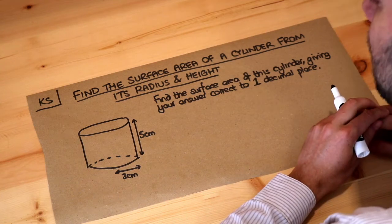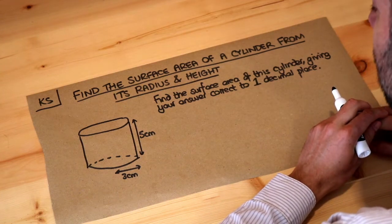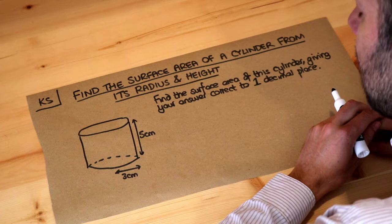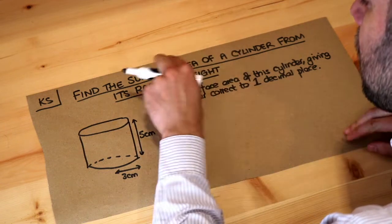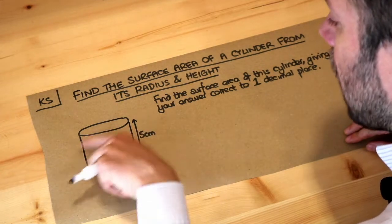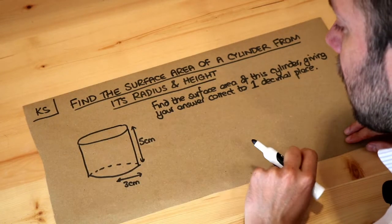Hello and welcome to this Dr Ross Mass's key skill video on finding the surface area of a cylinder from its radius and height. Now remember, the surface area of a solid means the total area on all the faces of the shapes.